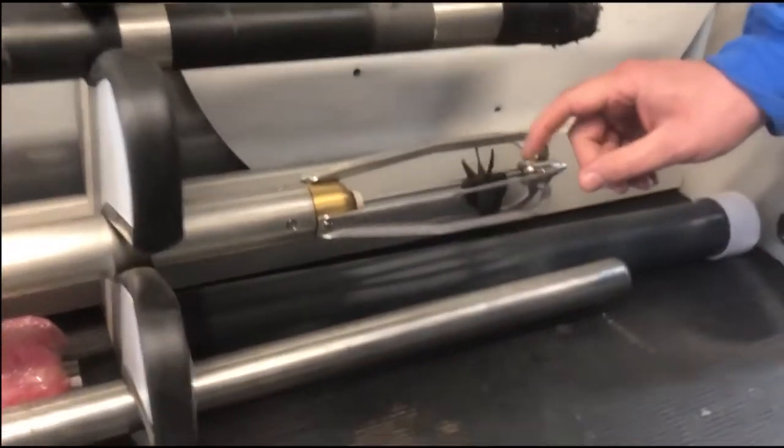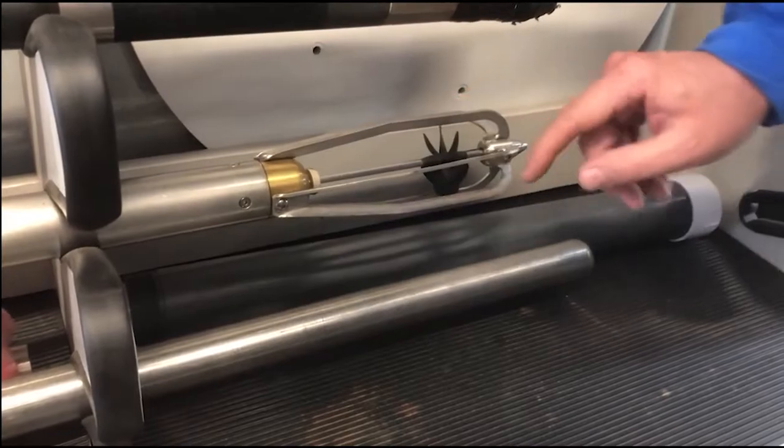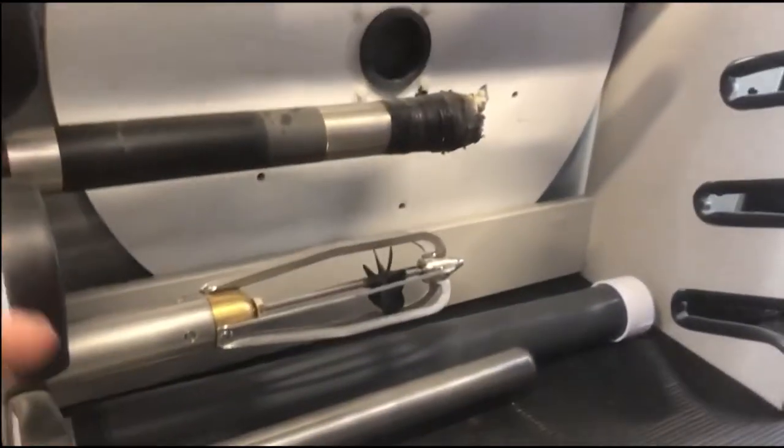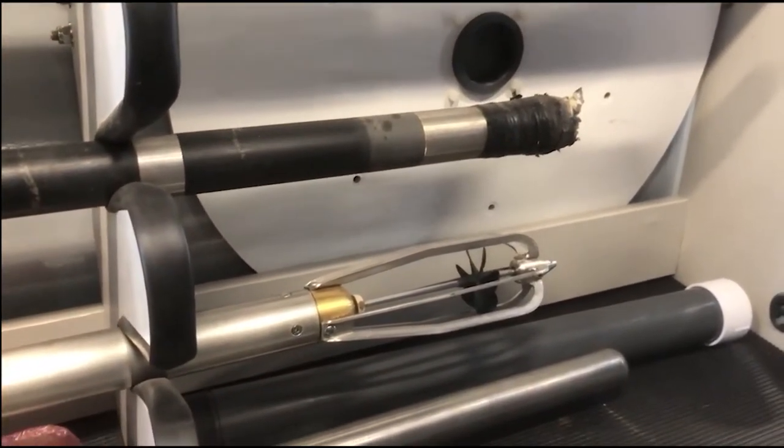For higher flows, we have a spinner flow meter. You can see here, I can get it to spin. There we go. That measures higher flows. Each revolution has a little electronic signal that goes on so it can measure very accurately.